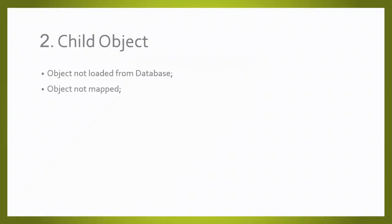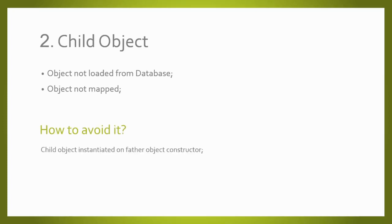Another very common situation when we face this error is when we are trying to access child objects. A child object is an object inside another object, and this usually happens when we are loading objects from a database, or when we are mapping one object to another and forget to map the child objects — then when we try to access that child object, it is going to be null. The good practice recommends that the child object must be instantiated in the parent object's constructor.